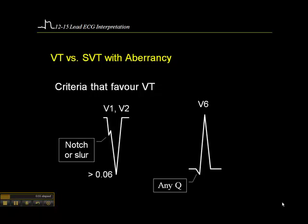That history is important information to elicit. Here are some ECG criteria that favor ventricular tachycardia. If there's a notch or a slurred area in the downslope of the QRS in V1 or V2, that favors ventricular tachycardia. If the distance from the onset of the QRS to the tip of the S-wave in V1 — called the S-nadir, spelled N-A-D-I-R — is greater than 0.06 second, that is one and a half small squares.